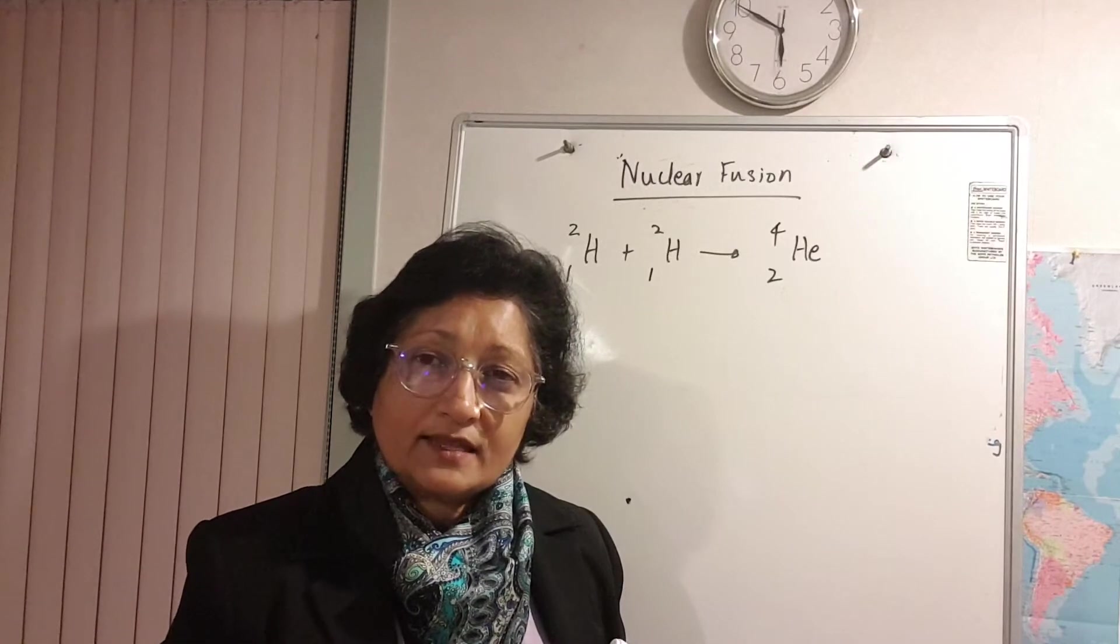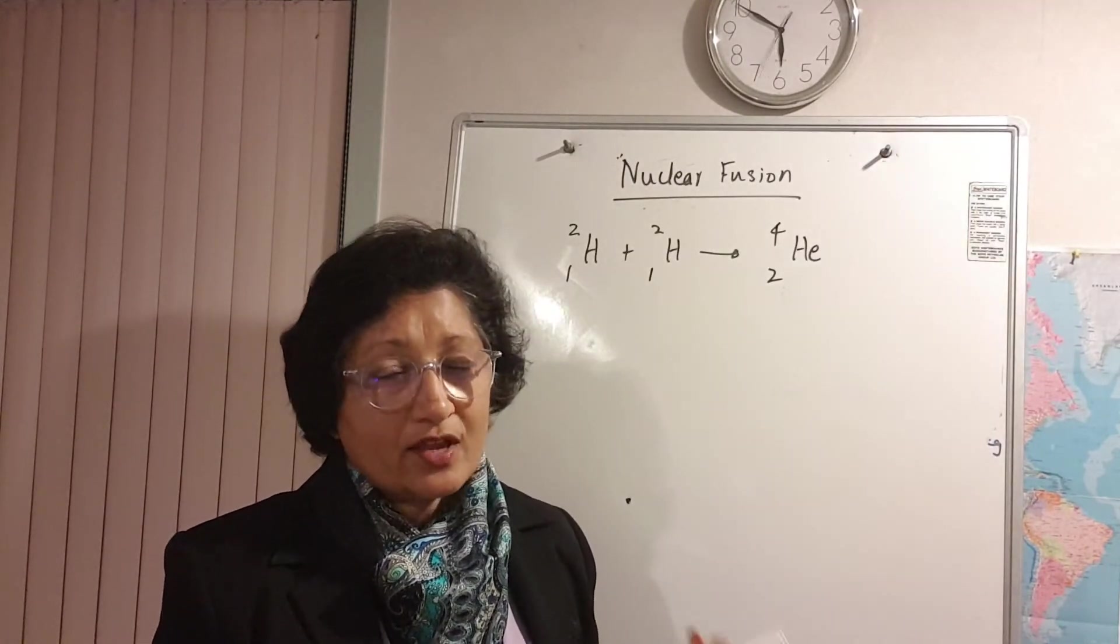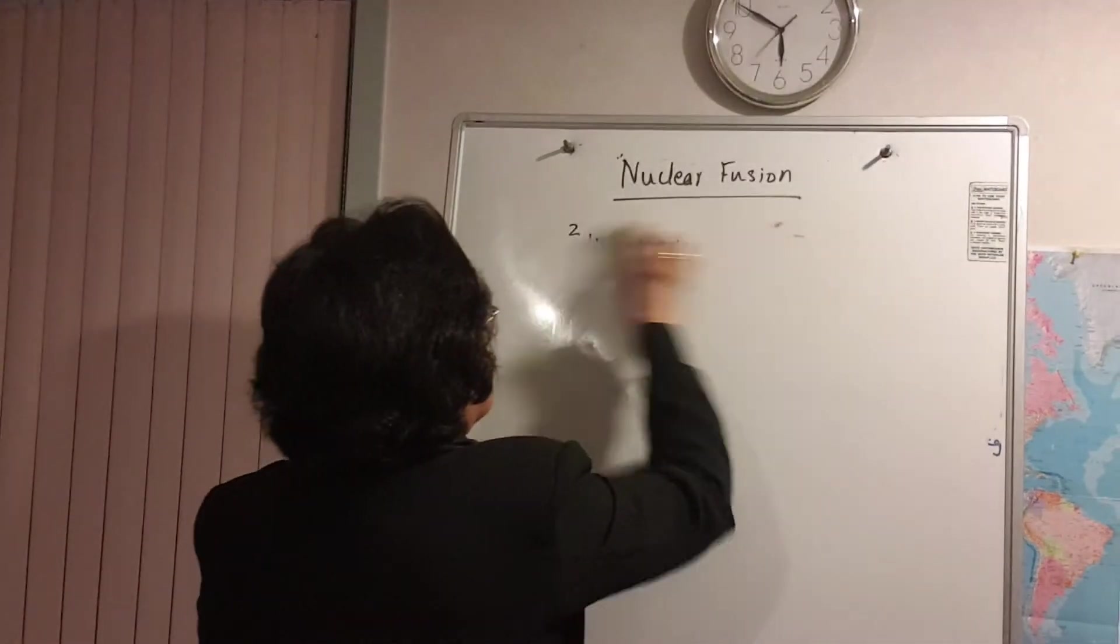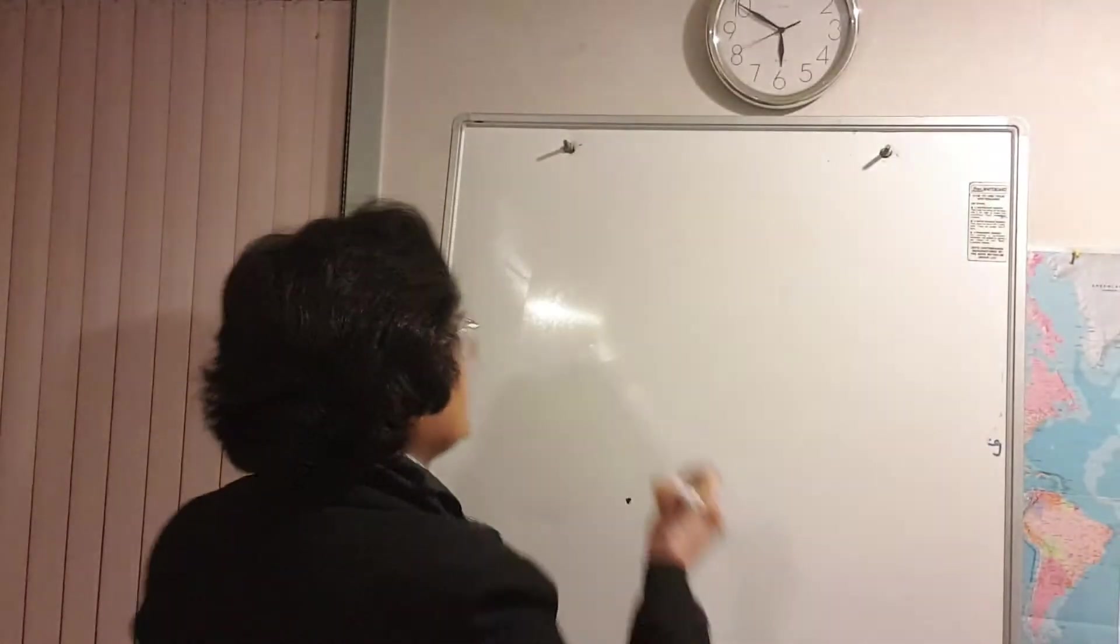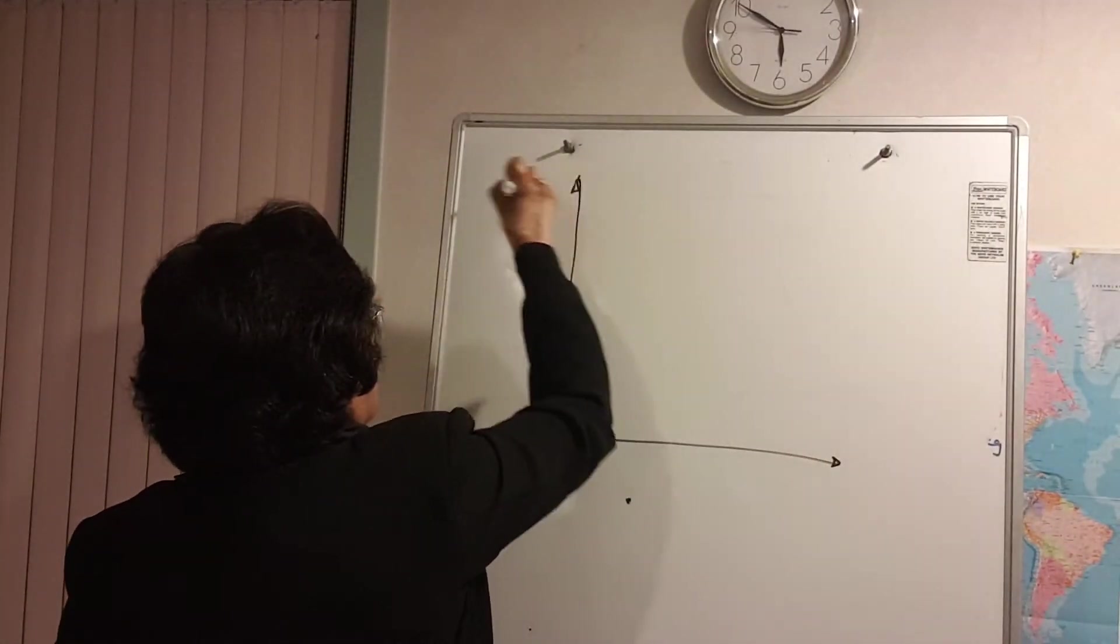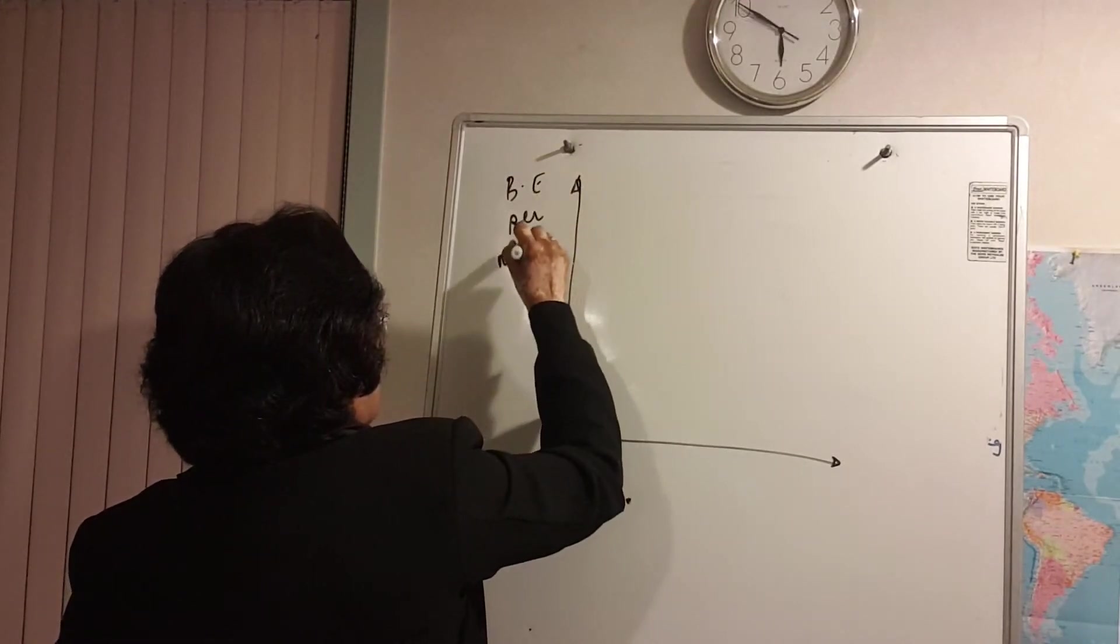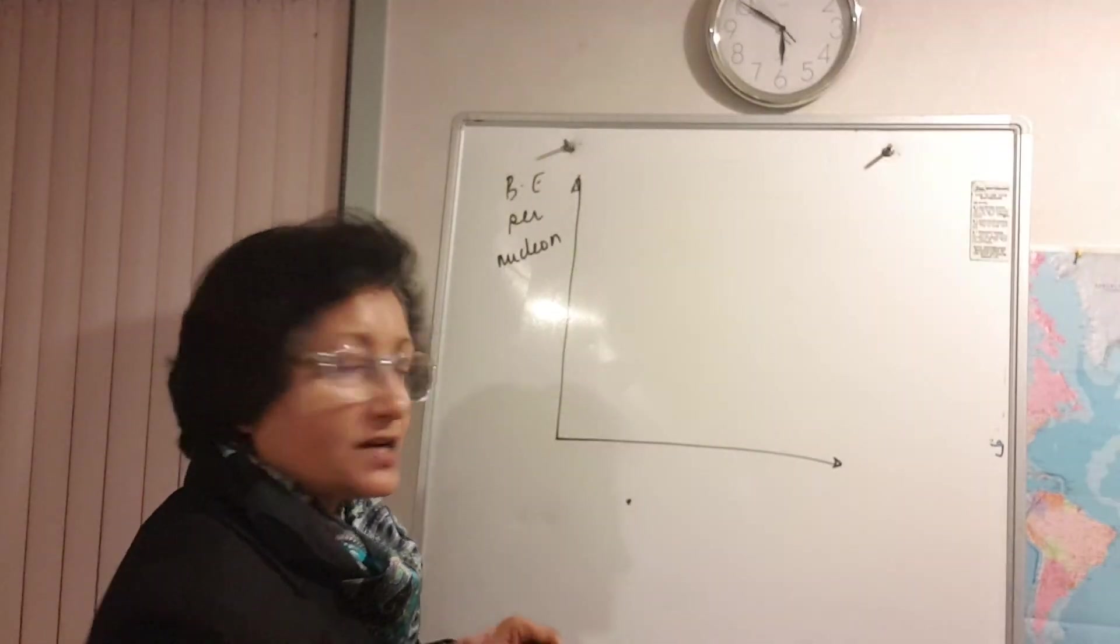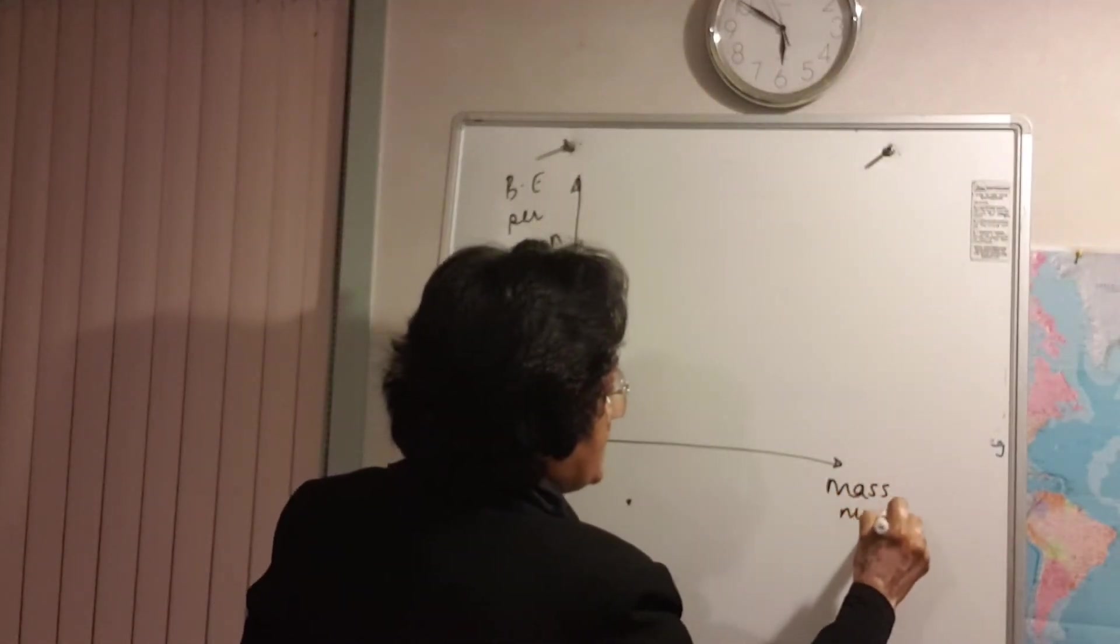But if you want to relate this to the nuclear binding energy and nuclear stability, it's just another way of looking at it. So if I draw my binding energy curve here, that's the binding energy per nucleon and this is your nucleon number or mass number.